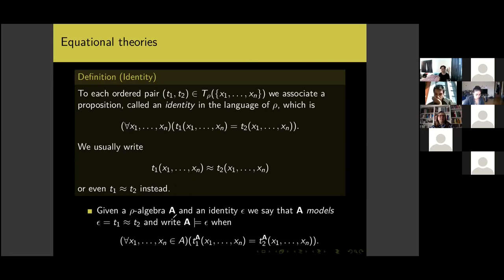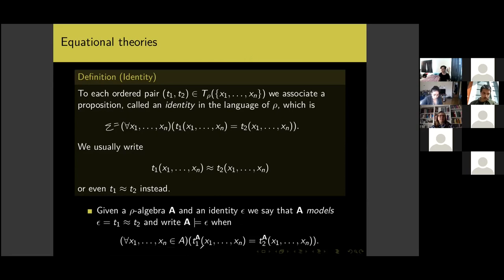If we have a rho-algebra A and some identity epsilon, we say A models epsilon when for all possible assignments of the variables x_i to actual values in A, the first term operation applied to that tuple attains the same value as the second term operation applied to that same tuple. That's what it means for an algebra to satisfy an identity.